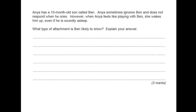Anya has a 10-month-old son called Ben. Anya sometimes ignores Ben — that suggests Ben will probably be insecure avoidant — and does not respond when he cries, so she's quite insensitive to her son's needs. However, when Anya feels like playing with Ben, she wakes him up even if he's soundly sleeping. That changes things, because she doesn't ignore him all the time — sometimes she does actually play with him. What type of attachment is Ben likely to show? I would say Ben is more likely to show insecure resistant, simply because she keeps changing her behaviour — sometimes ignoring him, sometimes playing with him. It's not going to be insecure avoidant because she doesn't ignore him all the time. You need to explain why Ben shows that behaviour because of the way Anya is inconsistent with him.